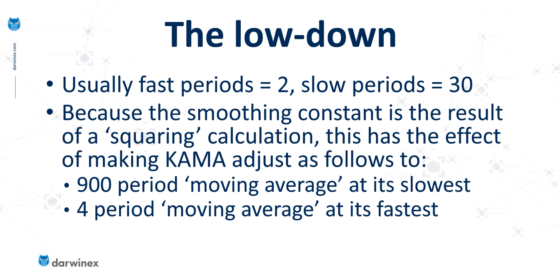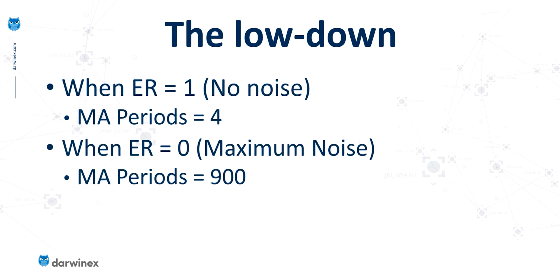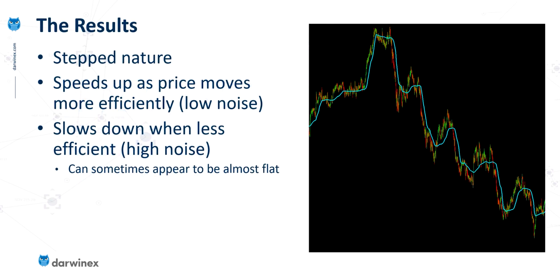At its absolute slowest, a 900-period moving average will be used, so it's effectively stationary or flat — it will hardly move each bar. At its fastest, when the efficiency ratio is high, we move right down to a 4-period moving average, so it's extremely fast and chases the price. When the efficiency ratio is 1 (perfectly efficient), the moving average period is 4 and the KAMA moves very quickly. When the efficiency ratio is 0, it's 900 periods. Anywhere in between, there's a range between 4 and 900 periods, and it's that changing of moving average periods that gives us this stepped nature in the moving average curve.